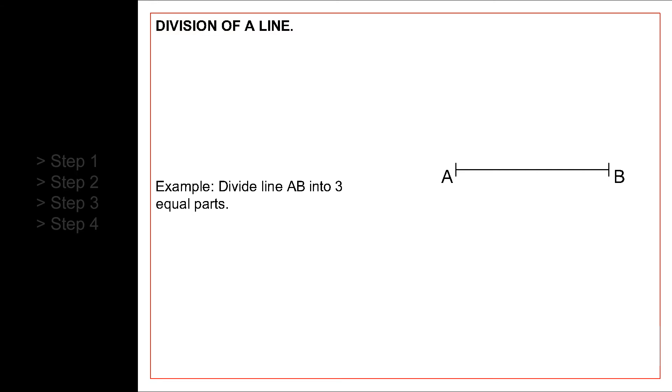Let's start. First, we draw a sloping line from endpoint A. The angle that it makes with line AB is not important.